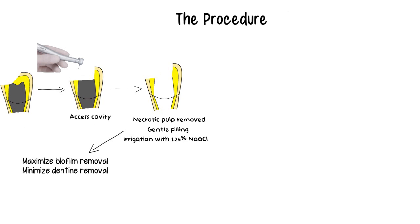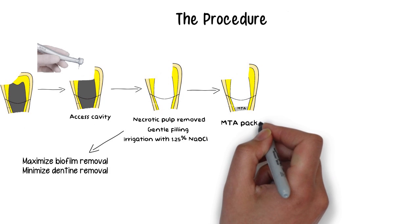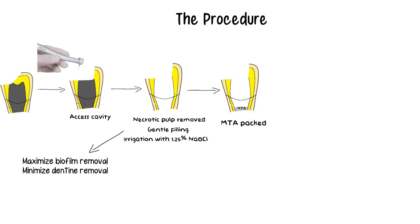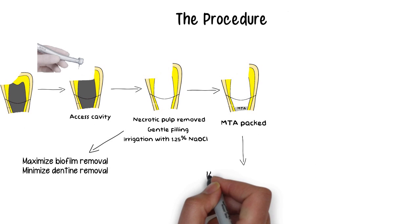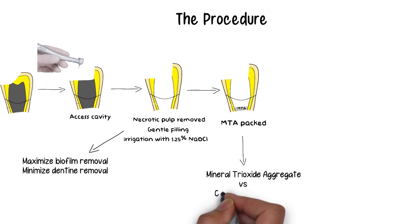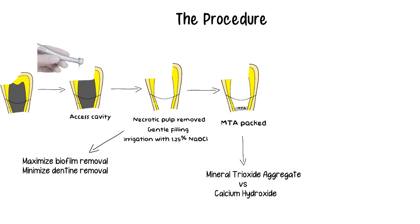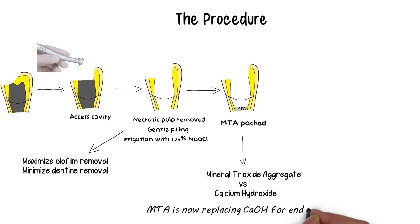After drying the canal with paper points, mineral trioxide aggregate — or MTA — is introduced into the canal as a powder or in a paste form and packed. MTA is currently replacing the once famous calcium hydroxide. Although calcium hydroxide was once very widely used, due to certain disadvantages it is now being replaced by MTA. More about the differences between MTA and calcium hydroxide will be covered in a separate video.